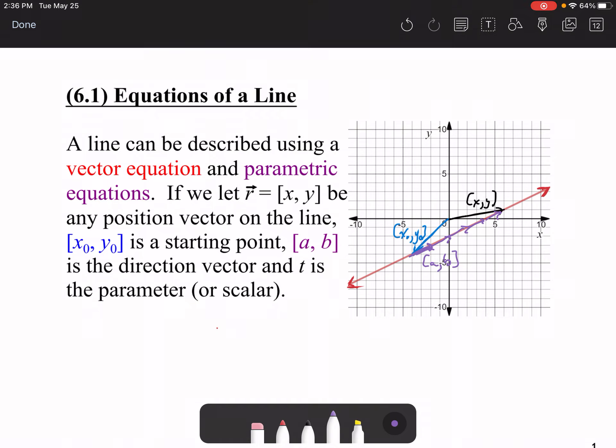So this creates what is called our vector equation. Our vector equation can be given by r, or (x, y), equals (x₀, y₀) plus some scalar multiple t of [a, b], where t is some real number.